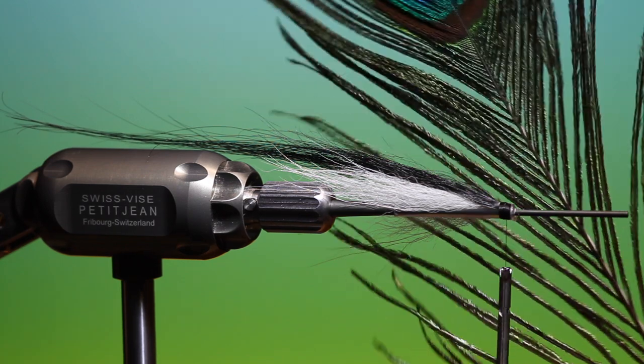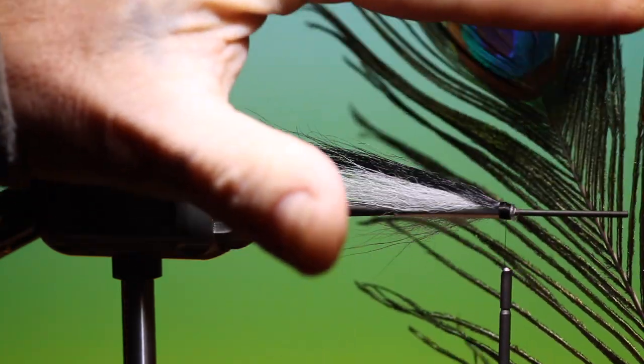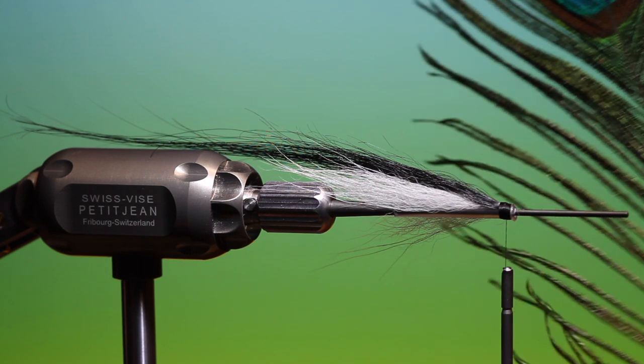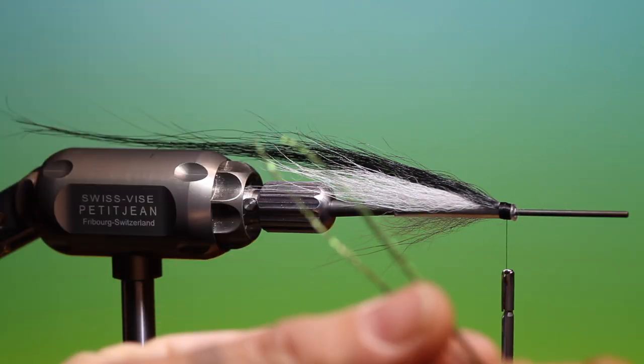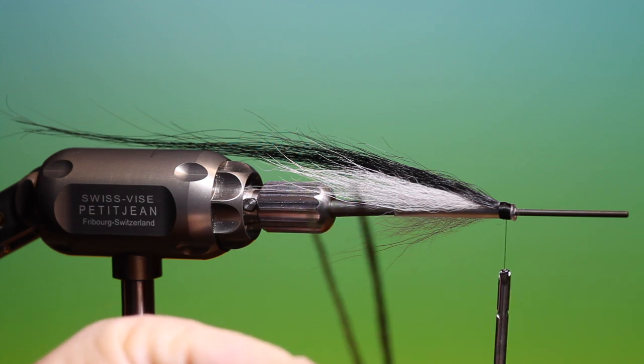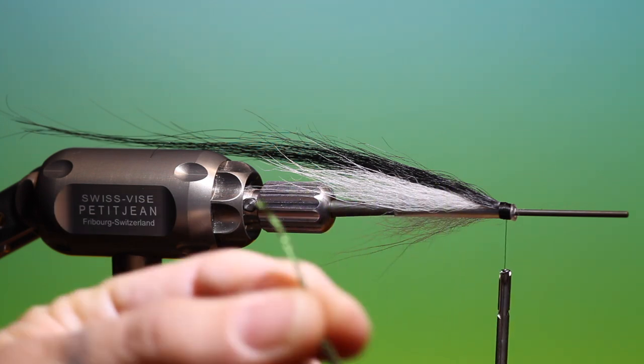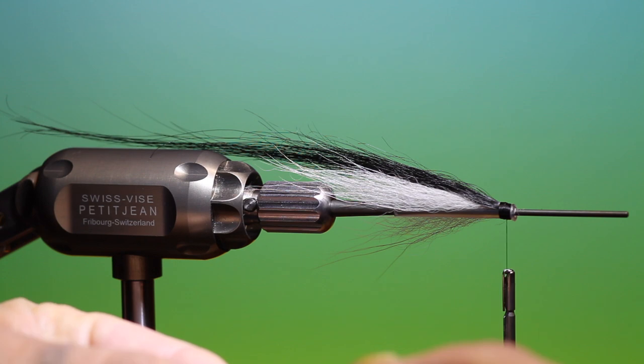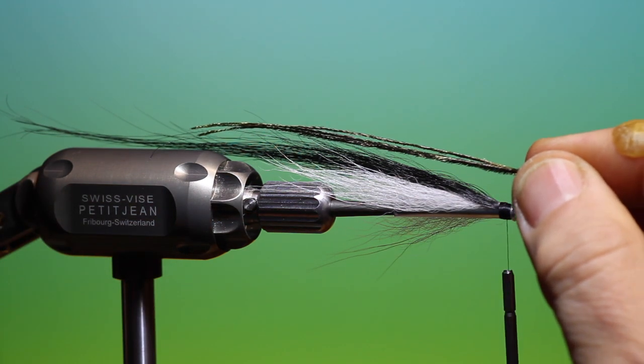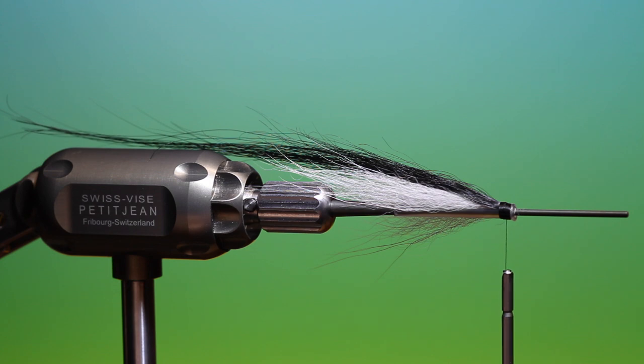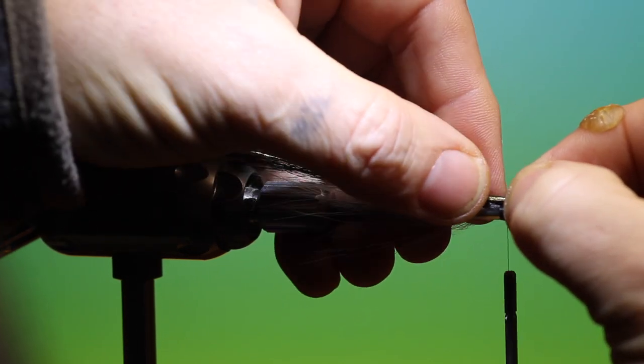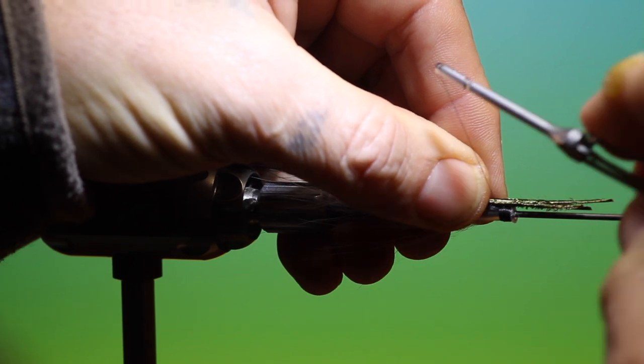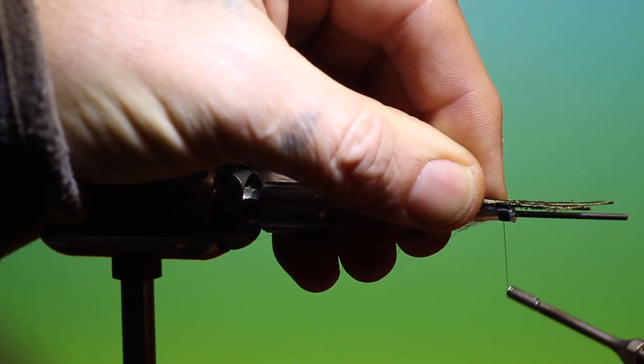And what we need is a peacock eye. And we want three or four long hull from this. So the hull wants to be, try and get them all in order. There we go. The hull wants to be a little shorter than the goat wing. There we are. So place these on top of the tube.